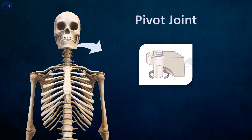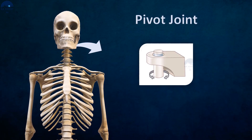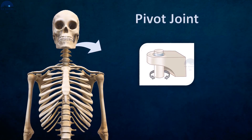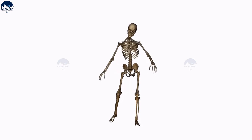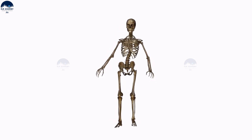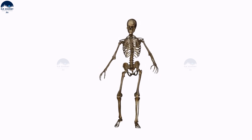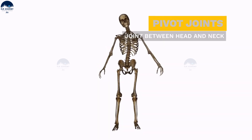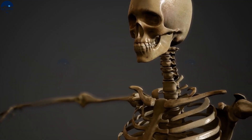Pivot joint: This joint allows movement in directions such as left and right, and up and down. For example, the joint between the head and the neck.